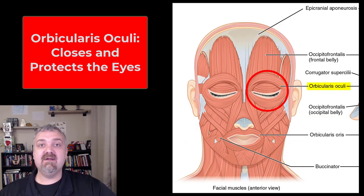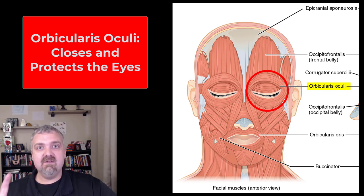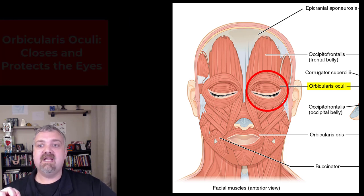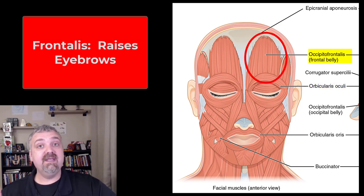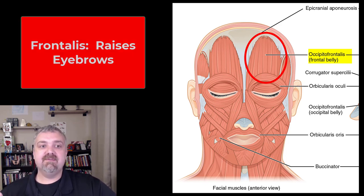The key muscles here are the orbicularis oculi. Anytime you see the word orbicularis, it means a circular muscle. Oculi refers to the eye, so the orbicularis oculi is that circular muscle around the orbit — around the eye — that closes the eye. Next, we have the frontalis, also called the frontal belly of the occipitofrontalis muscle. Both are correct, but frontalis is easier to remember. It sits over the frontal bone and raises your eyebrows.